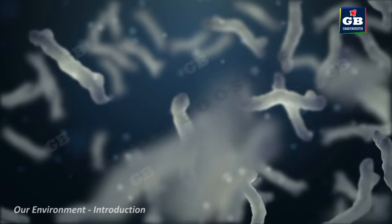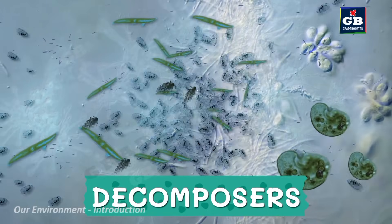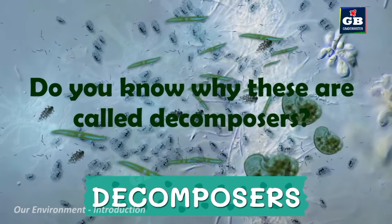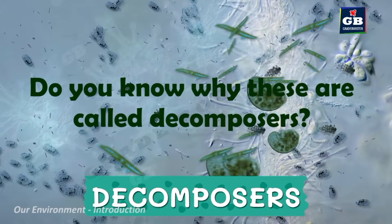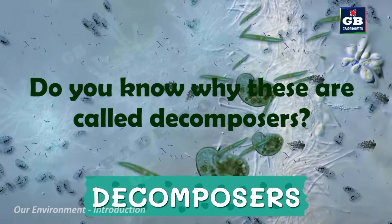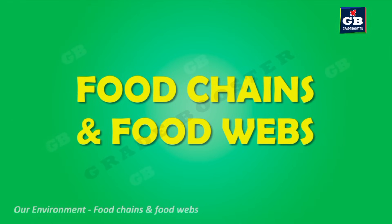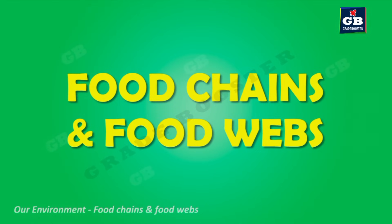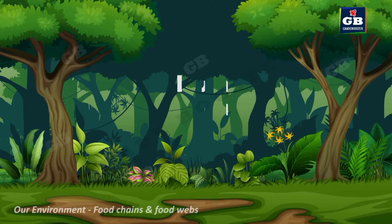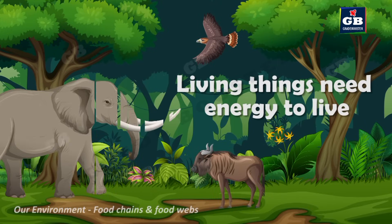The organisms that feed on the dead remains of plants and animals are called decomposers. They are called decomposers because these organisms decompose complex organic substances into simple substances — this process is called decomposition.